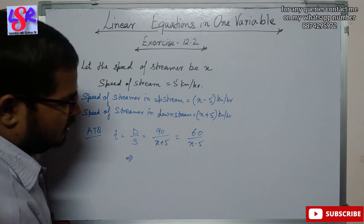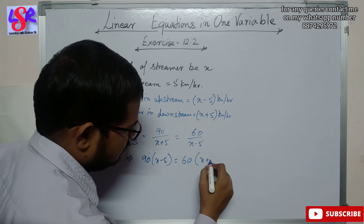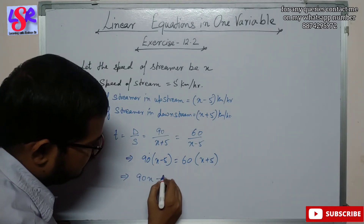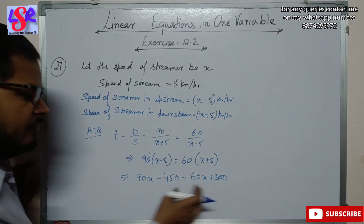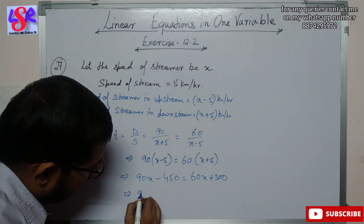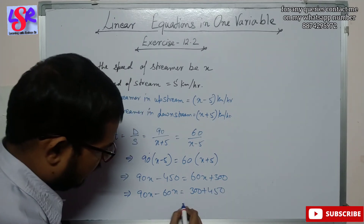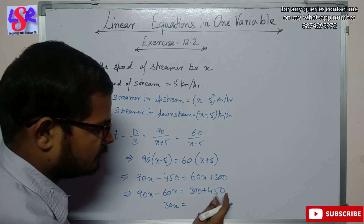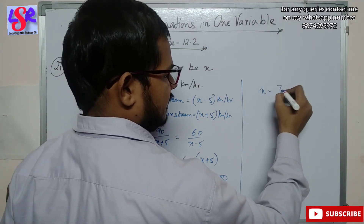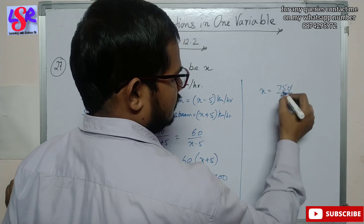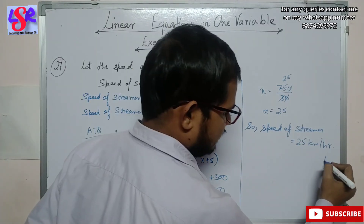By cross multiplication: 90 into (x minus 5) equals 60 into (x plus 5), giving 90x minus 450 equals 60x plus 300. Putting variables on one side: 90x minus 60x equals 300 plus 450, so 30x equals 750. Therefore x equals 750 divided by 30, which equals 25. The speed of the streamer in still water is 25 kilometers per hour.